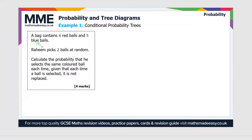A bag contains four red balls and five blue balls. Rahim picks two balls at random. Calculate the probability that he selects the same colour ball each time, given that each time a ball is selected it is not replaced.